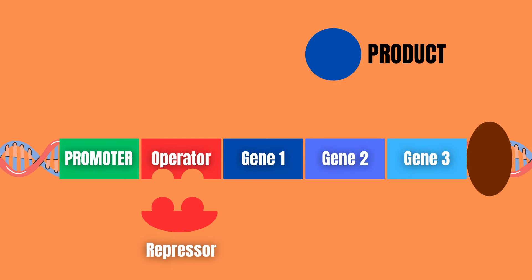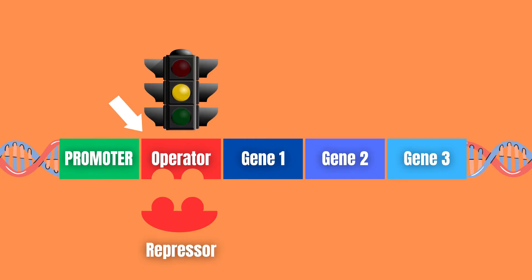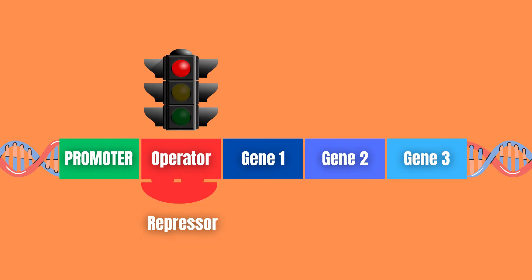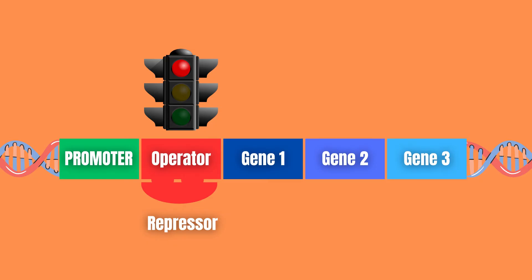Let us take a closer look at these individual parts. First, the promoter is where the RNA polymerase binds to initiate transcription of the genes. The operator can be thought of as a stoplight that either allows or prevents transcription of the genes by RNA polymerase. This depends on whether the repressor is bound to the operator or not.